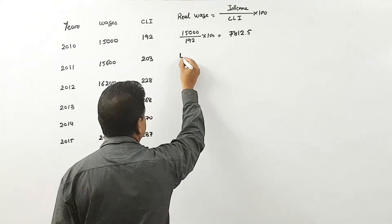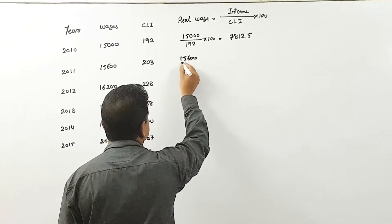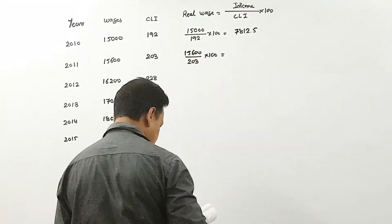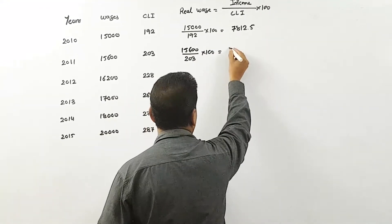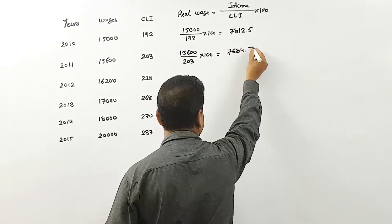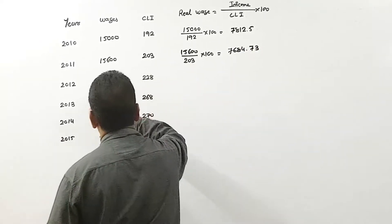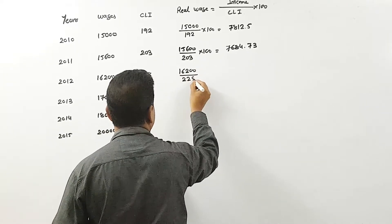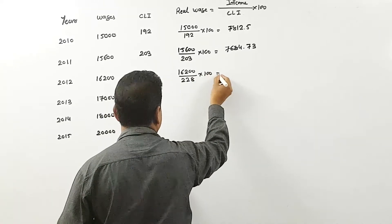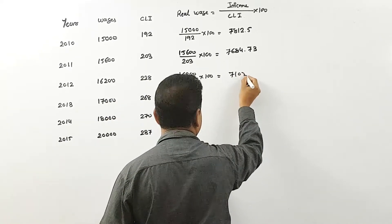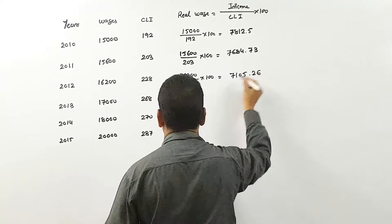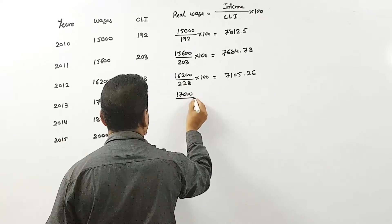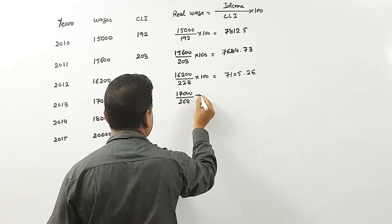For 2011: 15,600 divided by 203 into 100, giving 7,684.73. For 2012: 16,200 divided by 228 into 100, giving 7,105.26. For 2013: 17,000 divided by 268 into 100, giving 6,343.28.